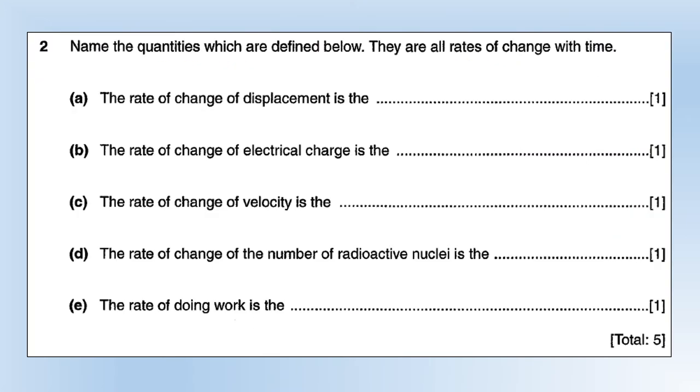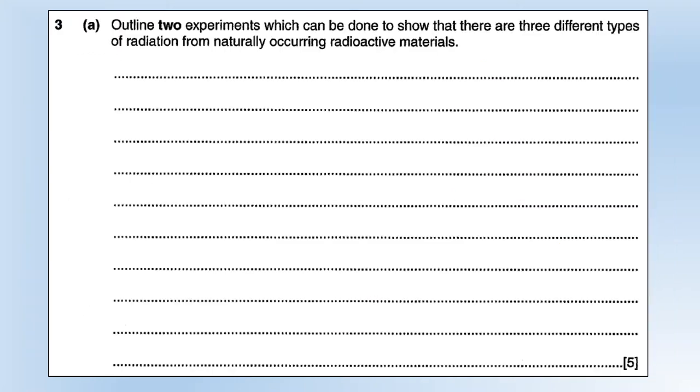Moving on to question 2: name the quantities which are defined below, they are all rates of change with time. The rate of change of displacement is velocity, the rate of change of electrical charge is current, rate of change of velocity is acceleration, rate of change of the number of radioactive nuclei is activity, and the rate of doing work is power. Fairly straightforward there.